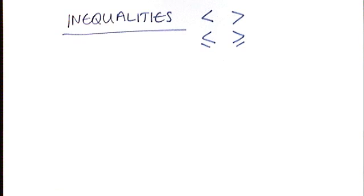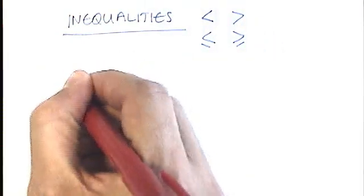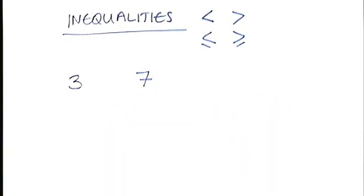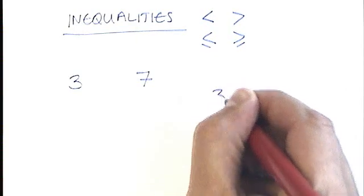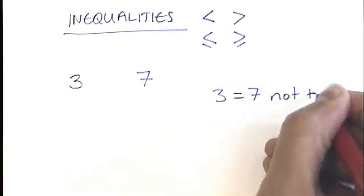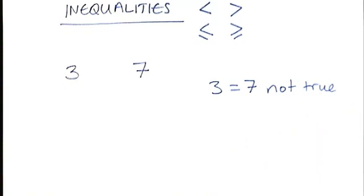Let's have a recap of what these symbols mean. Let's imagine that we've got 3 and 7. We want to put a symbol in between. We can't put 3 equals 7. That is not true. So this is where our inequality symbols come in.